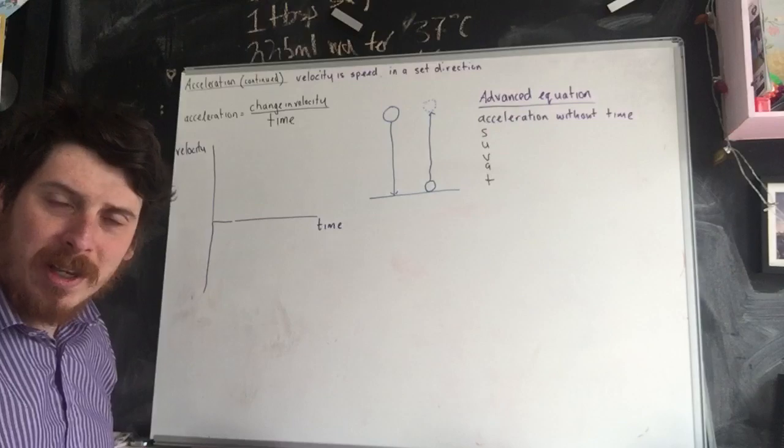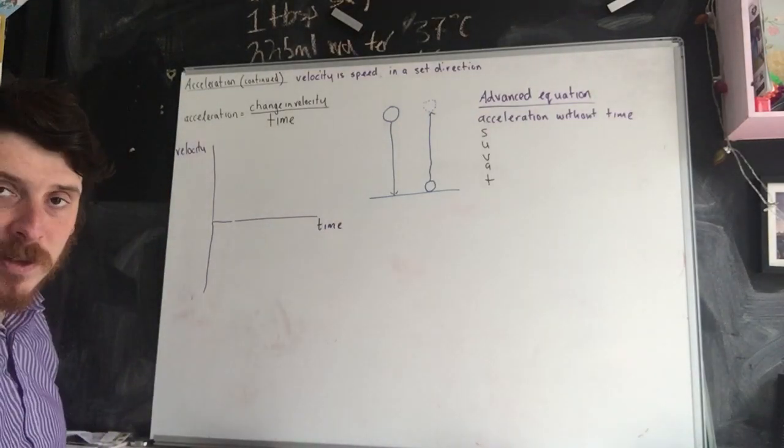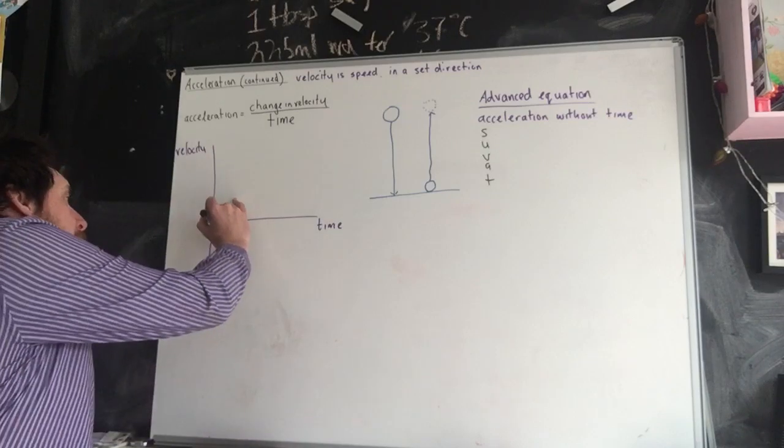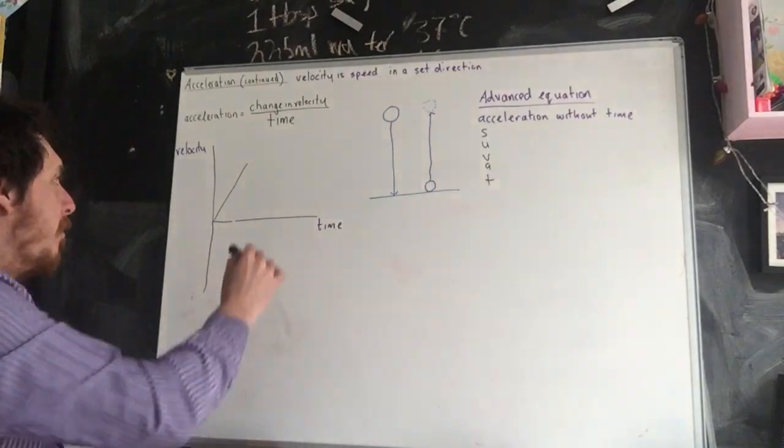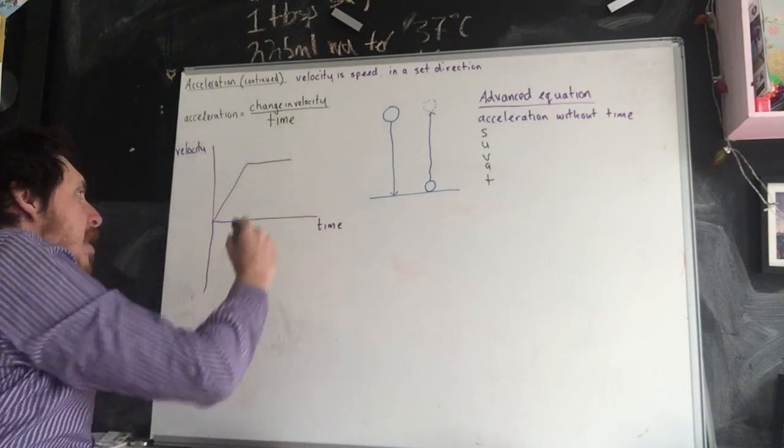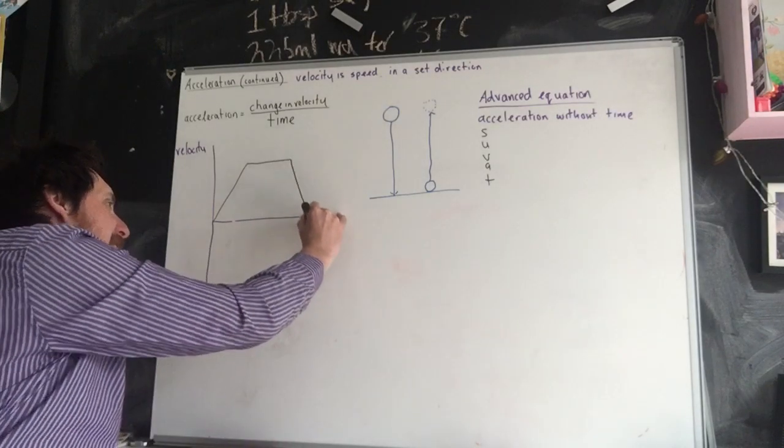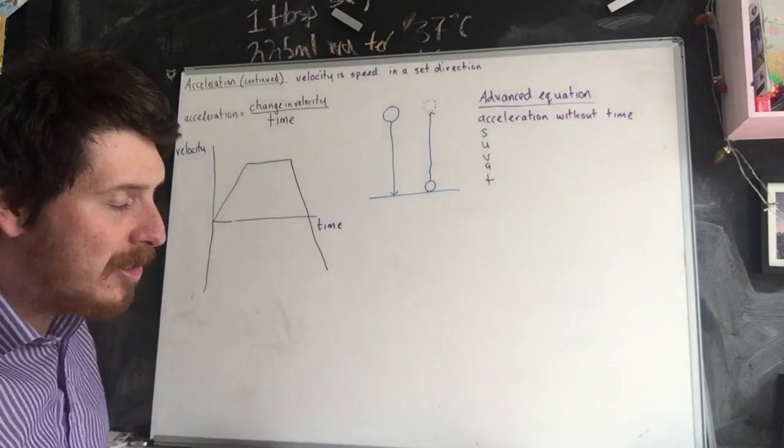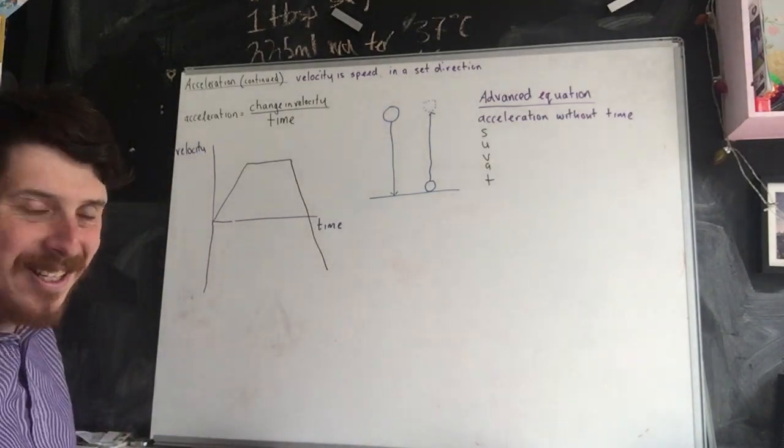Now you could be asked to answer some questions or interpret velocity-time graphs. An increase in velocity is represented by an upwards gradient. The same speed or the same velocity is represented by a horizontal line. And then something that is decreased in velocity is represented by a negative gradient.